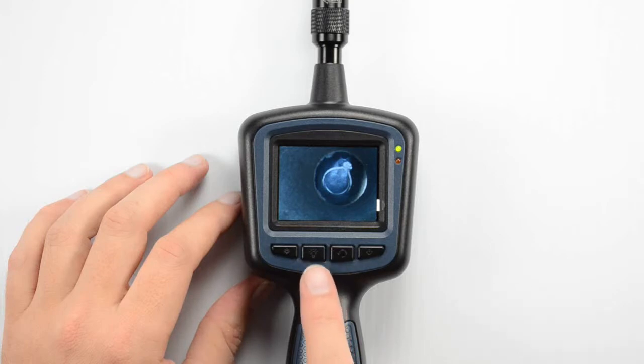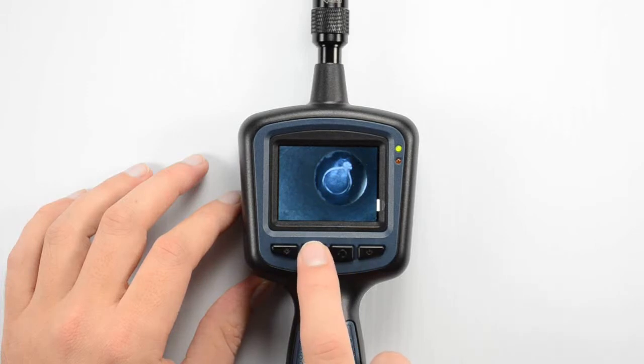The next button that we've got here is our brightness adjustment. This is for the LEDs at the end of the camera and each time we press that we can see we're adjusting the brightness of those LEDs.